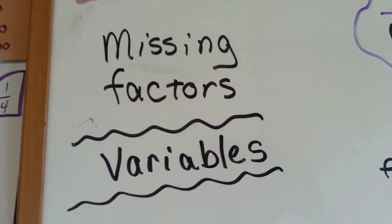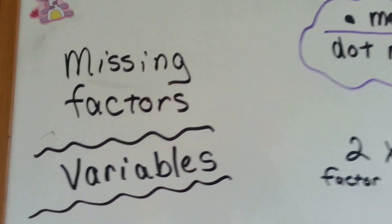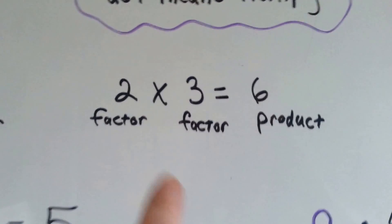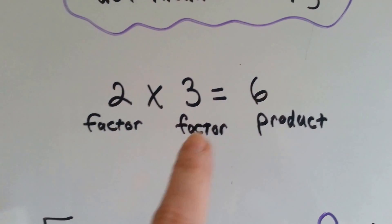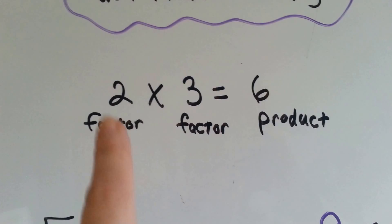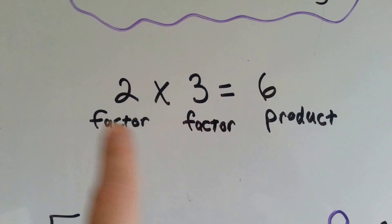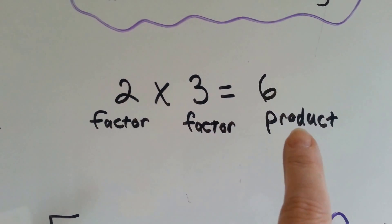What is a variable? What is a factor? Well, let's take a look here. When you have a multiplication problem, the numbers that you multiply together are factors. The answer is the product.